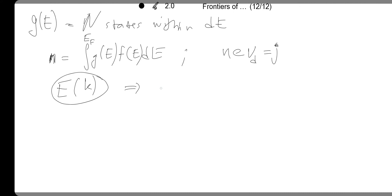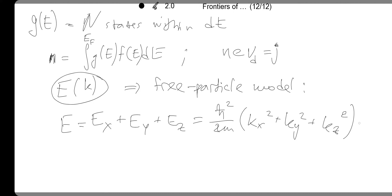We will be using only a free particle model here. In this case, the energy is described as a sum of these three components Ex, Ey, Ez, obtained from solving independently three Schrödinger equations in each of these three coordinates. The solution would be h-bar squared over 2m times kx squared plus ky squared plus kz squared. That's what we did in the free particle model.